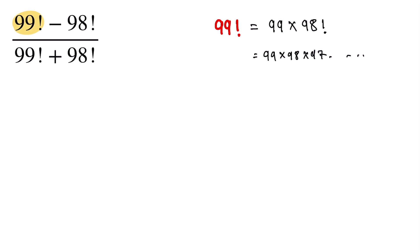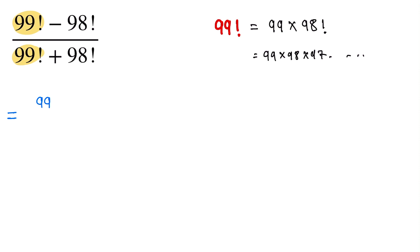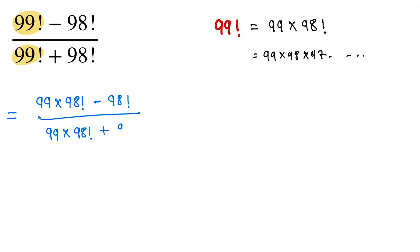Now we substitute this value. Since 99 factorial equals 99 into 98 factorial, the expression becomes: 99 into 98 factorial minus 98 factorial, divided by 99 into 98 factorial plus 98 factorial.